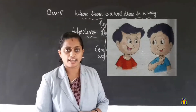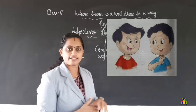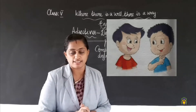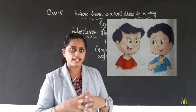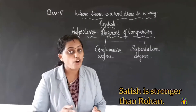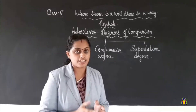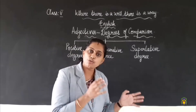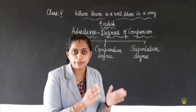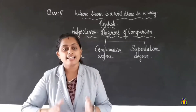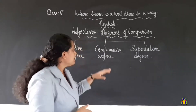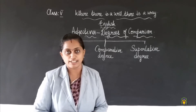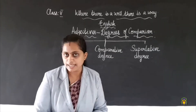Now I have Satish and Rohan here — two boys. I am going to compare Satish and Rohan together. I am saying: Satish is stronger than Rohan. When we compare two persons or things, we will be using the comparative degree of adjective.